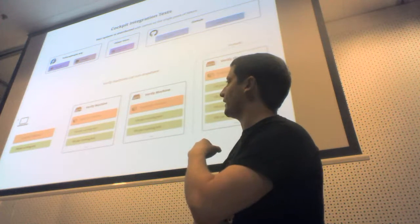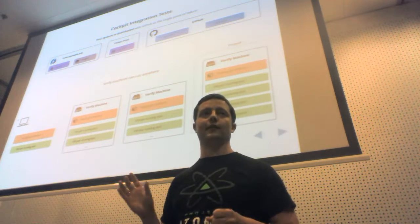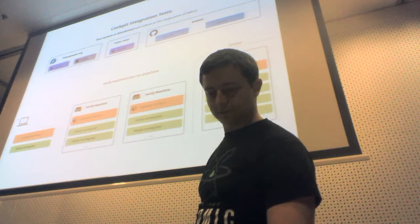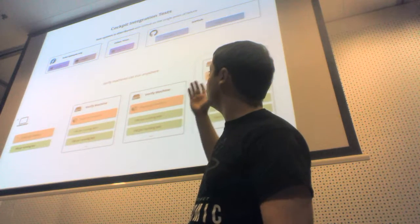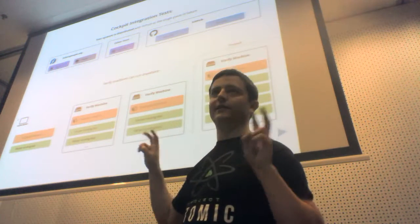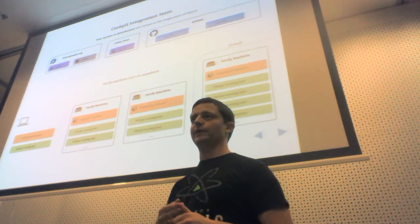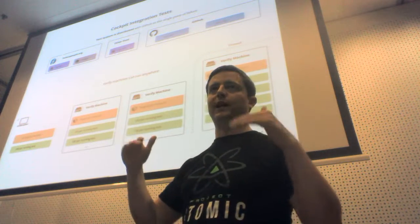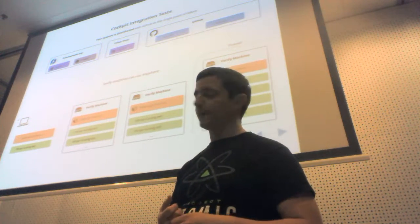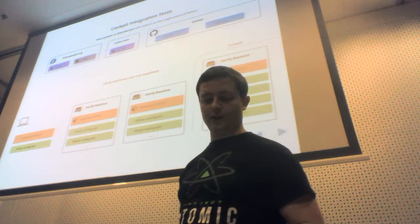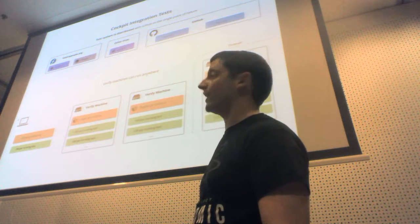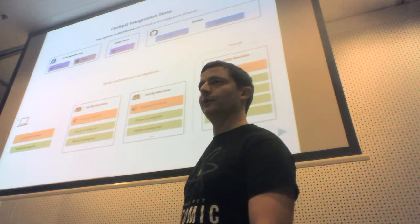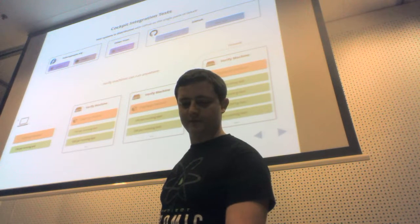It doesn't matter where the tests are run as long as everyone can see the results — if you can't see test results, it didn't happen. We look at testing tasks to run, like creating a new testing image — we try to create a new image every week for Fedora to get new packages and see if the API has changed. We see the testing status on GitHub, can pull and push images. We also have known issues — tests that we know currently fail because of upstream issues — and we keep track of those as well.